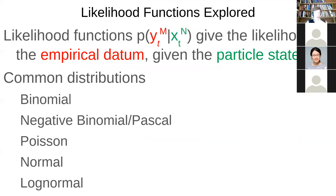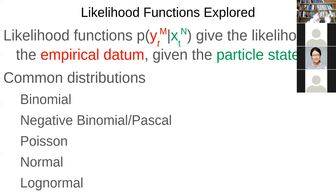There were some questions about the likelihood function earlier. For a given particle at a given time, it has a certain hypothesis about the world — it believes there's a certain number of people in each compartment of a compartmental model, or a certain state of an agent-based or discrete event model. We're asking: how likely is it, if this is the state of the world as depicted by this particle, that we'd observe this empirical data?